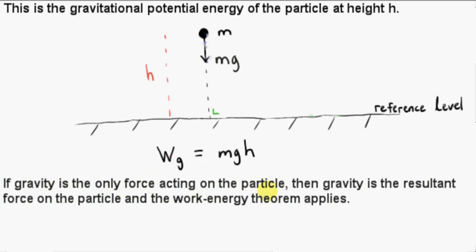If gravity is the only force acting on the particle, then it's obvious that gravity is the resultant force on the particle. If gravity is the resultant force on the particle, the work energy theorem applies. We saw that the work done by the resultant force on the particle is the change in the kinetic energy of the particle. Since the resultant force is gravity, the work done by gravity on the particle is the change in the particle's kinetic energy.